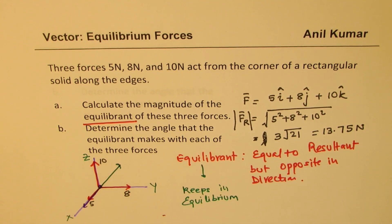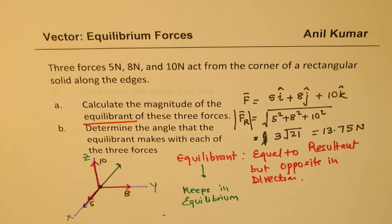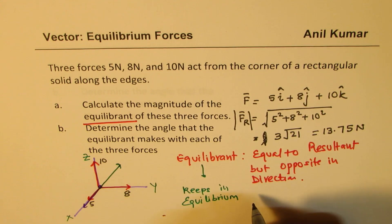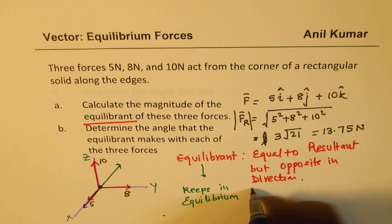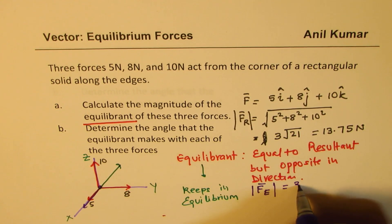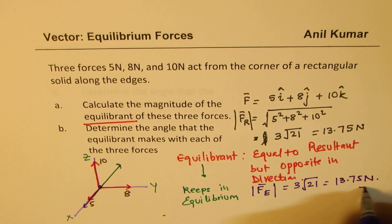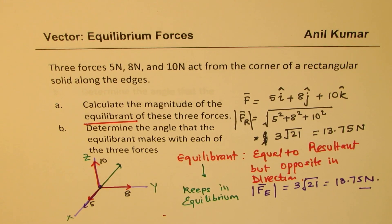So it is going to act in the opposite direction. But the magnitude is going to be same. So this magnitude, force of equilibrium, is the same as 3 square root 21 or you can say 13.75 newtons. Is that clear to you?